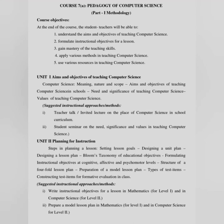Course 7 is Pedagogy of Computer Science. Course objective: at the end of the course, the student teacher will be able to understand the aim and objectives of teaching computer science; formulate instructional objectives for a lesson; gain mastery of teaching skills; apply various methods in teaching computer science; and use various resources in teaching computer science. Unit 1 is Aim and Objective of Teaching Computer Science: computer science — meaning, nature and scope; aim and objectives of teaching computer science in school; need and significance of teaching computer science; value of teaching computer science.